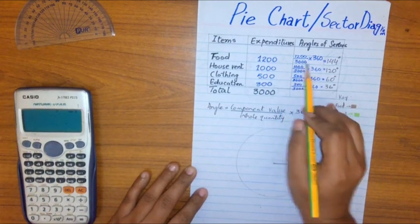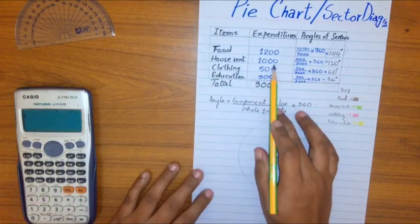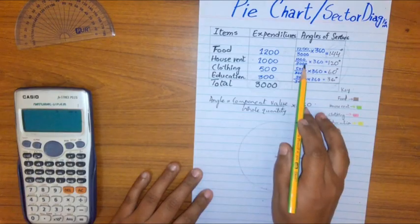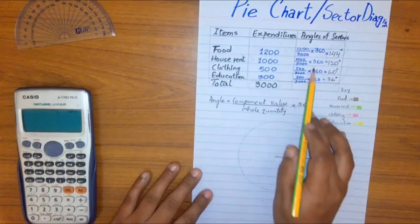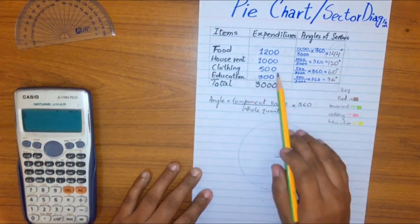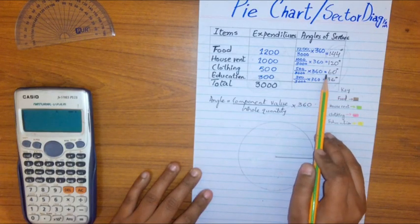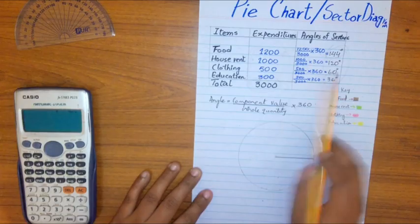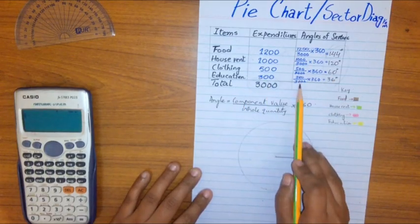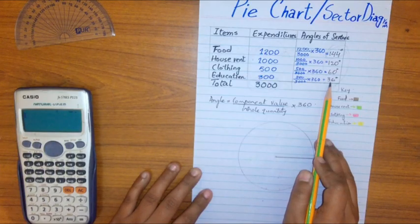For food: 1200 divided by 3000 multiplied by 360 equals 144 degrees. For house rent: 1000 divided by 3000 multiplied by 360 equals 120 degrees. For clothing: 500 divided by 3000 multiplied by 360 equals 60 degrees. For education: 300 divided by 3000 multiplied by 360 equals 36 degrees.